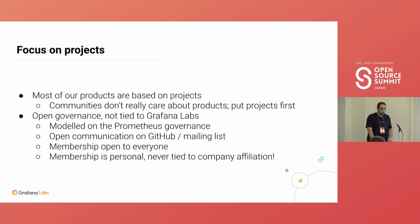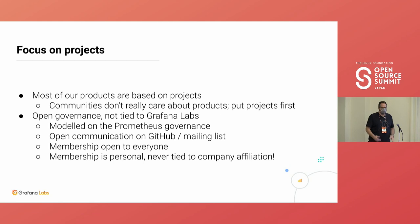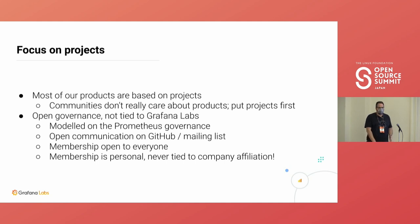Communication by default happens on mailing lists and GitHub. It's sometimes hard to push things out of Slack and onto GitHub, but by and large we do a good job — and this is important because external people can communicate, participate, and improve a PR. It's really important to have the majority of communication on public channels. Membership is open to anyone — you don't have to work at a friendly company. Even full maintainer rights are open to everyone, purely based on personal contributions, not tied to company partnerships.